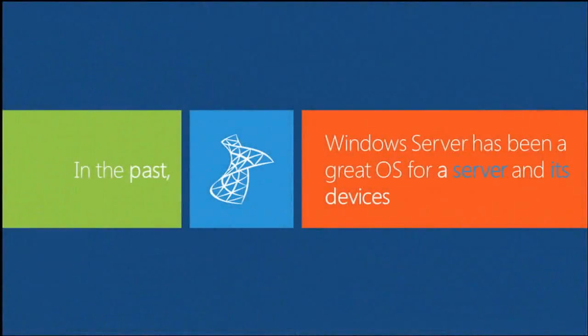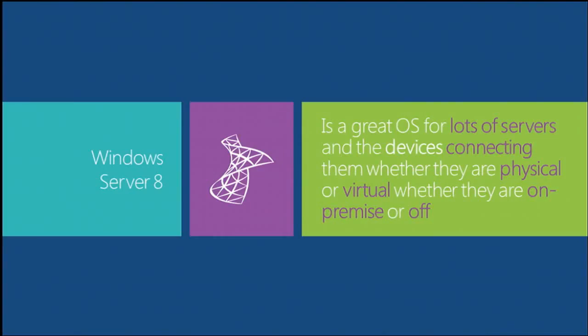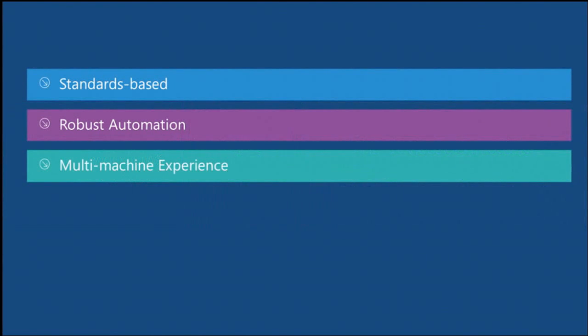I want to start with some context. Windows Server has always been a great OS for a single server and its devices. But starting with Windows Server 2012, there's a transformation: we want to be a great OS for lots of servers and the devices connecting them — physical, virtual, on-premises, or off-premises. We want to be a cloud-optimized OS, which is a fundamental change in the responsibilities of the operating system.